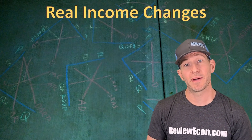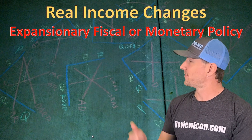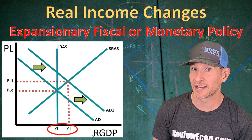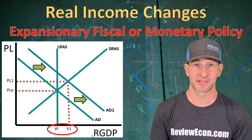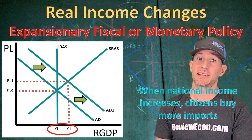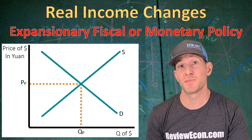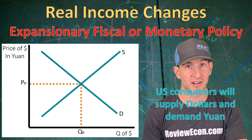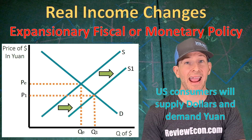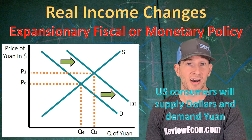Next, we're going to look at changes in real income and their impacts on the foreign exchange markets. Expansionary fiscal and monetary policy both shift the aggregate demand curve to the right on the AS-AD graph, causing real income — real GDP — to increase. When national income increases, citizens within that country are going to buy more of everything, including imports from other countries. Since US citizens are going to be demanding more foreign-made goods including those made from China, consumers are going to increase their supply of US dollars and increase their demand for Chinese yuan as they demand more imports. So the supply of US dollars is going to increase and the currency is going to depreciate, meaning the exchange rate has fallen. On the flip side, we're going to see an increase in the demand for Chinese yuan, and the Chinese yuan is going to appreciate.